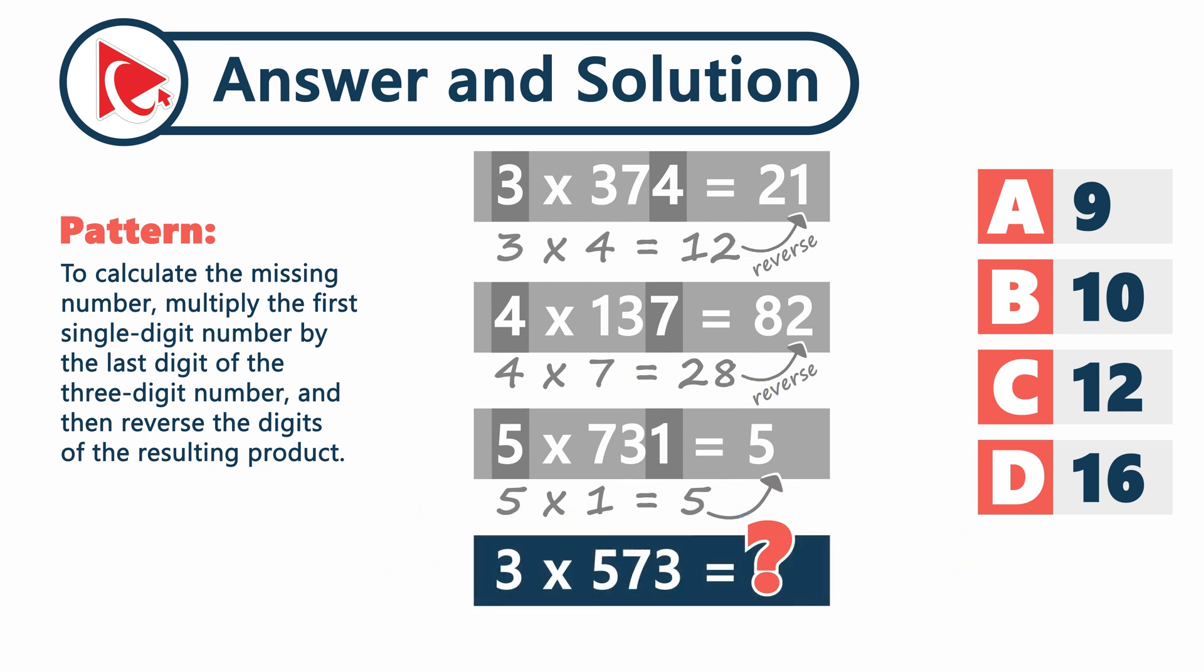3 multiplied by 573 equals 3 multiplied by 3 and equals 9. So the correct answer here is just a 9.